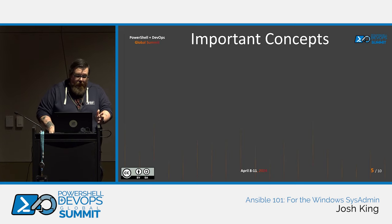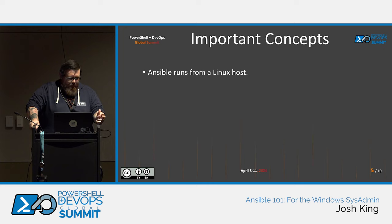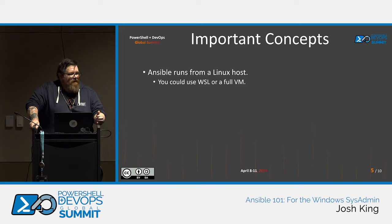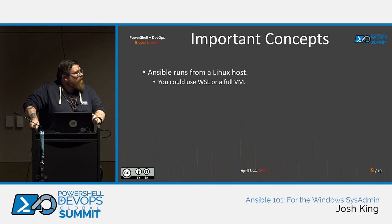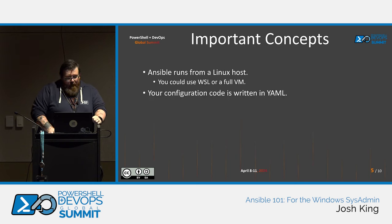Before we get into the demo, some important concepts. Ansible runs on a Linux host, which is why we need to have a little bit of Linux in our back pocket. To achieve that, you could use Windows Subsystem for Linux on a Windows box, run a full VM, or run bare-metal Linux. I personally go for a full Linux VM because I use VMware Workstation and turning on WSL kills some things I need out of VMware.